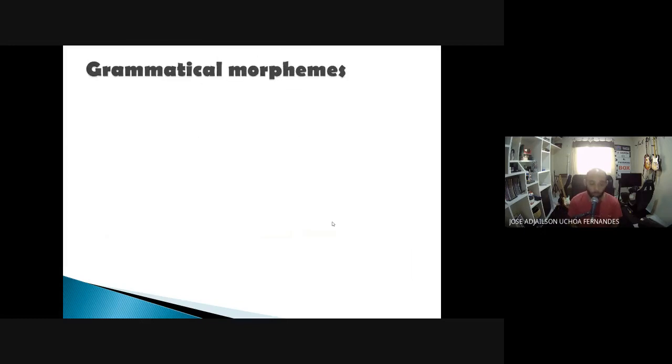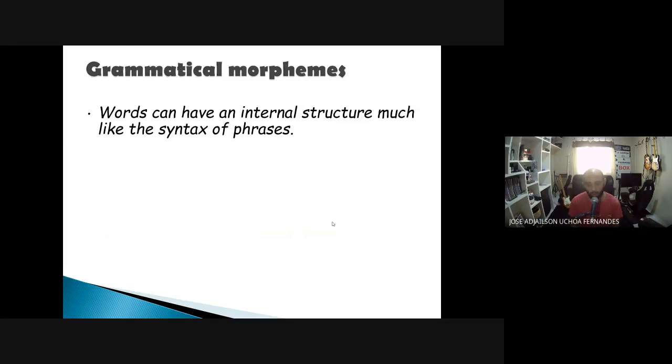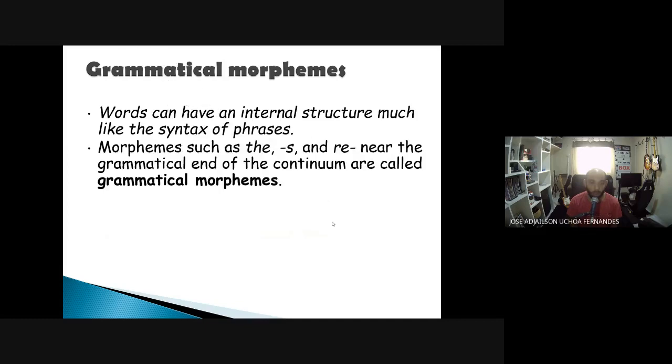So grammatical morphemes like these, the final 's' for plural, can have an internal structure. This tells us that words can have an internal structure much like the syntax of phrases. So it's predictable whenever you put an 's' or 'es' or 'oes', you are making the word in its plural form. Morphemes such as the final 's' or 're' in the case of the prefix 're' are near the grammatical end of the continuum.